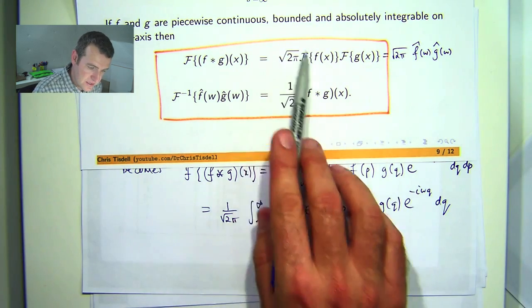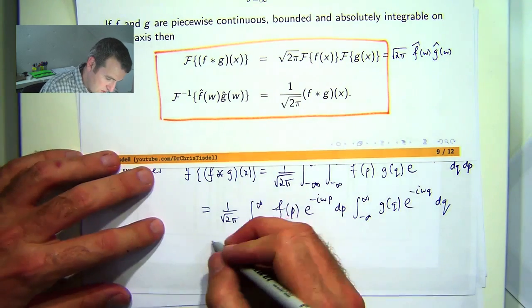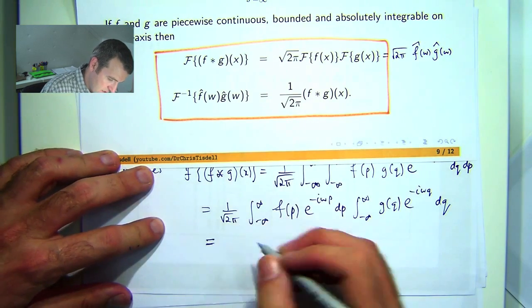This isn't quite the transform of g because I don't have the one on root 2 out the front. But that's okay because this will work.